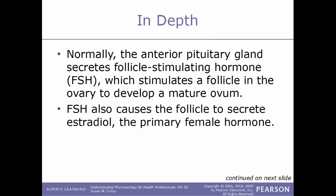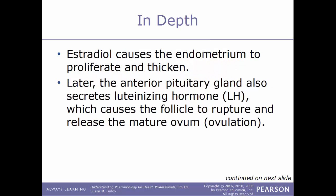Normally, the anterior lobe of the pituitary gland secretes FSH, follicle-stimulating hormone, which stimulates a follicle within the ovary to develop a mature ovum. FSH also causes the follicle to secrete estradiol, the primary female hormone. Estradiol causes the endometrium to proliferate and thicken. Later, the anterior pituitary gland secretes LH, luteinizing hormone, which causes the follicle to rupture and release the mature ovum — a process called ovulation.